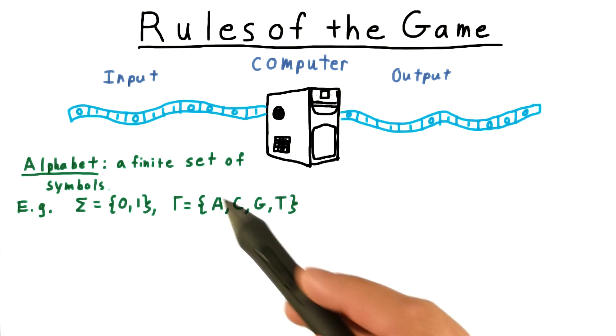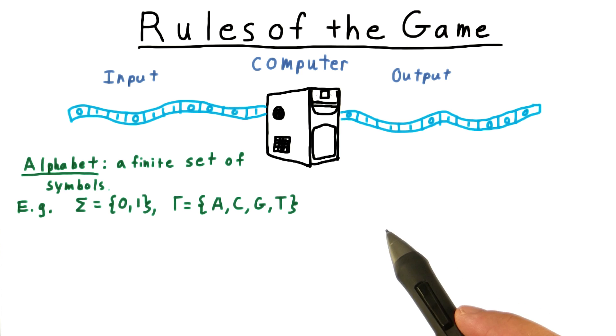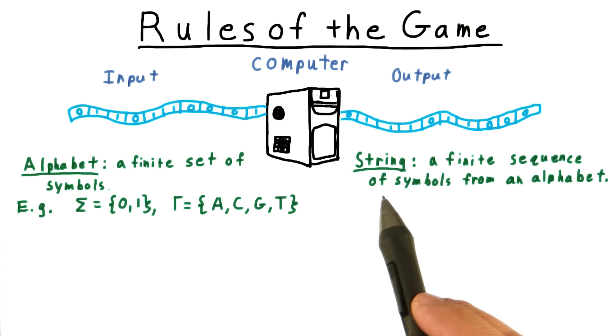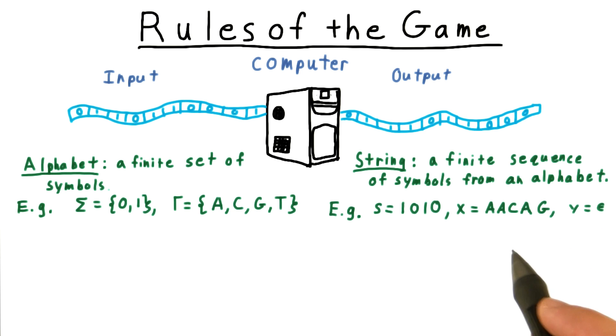Now creating a new symbol for every possible input and output would not be very convenient, so instead, we use finite sequences of symbols, which we call strings. For example, over the alphabet sigma, we might have the string 1, 0, 1, 0, which might represent the number 10. Or over our alphabet gamma, we might have the string X = AACAG, which might represent part of a DNA sequence. We notate the empty sequence, which doesn't have any symbols in it, with a special character epsilon.